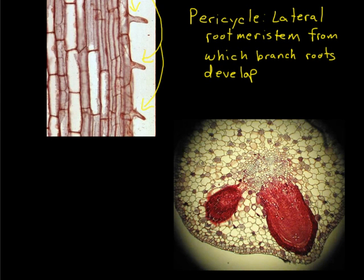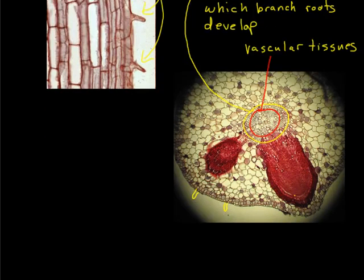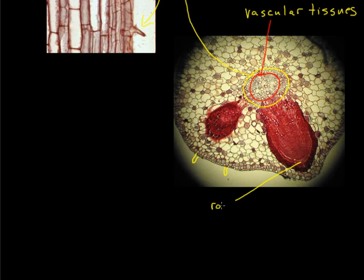Looking at a cross-section of the root — the root hairs would be growing outward from the epidermal layer. Since root hairs are only one cell thick, side branches of the root have to develop from a lateral meristem. The pericycle is found just inside the vascular tissues region. From this lateral meristem, the pericycle, we start to see the development of a brand new root tip complete with its own root cap.